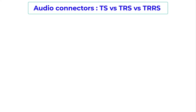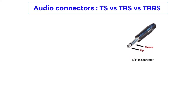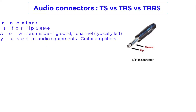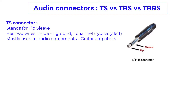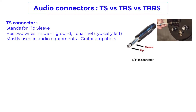Let's start with the first one: a TS connector. It stands for tip-sleeve connector. These connectors have two wires inside — one is for ground and one is for channel, typically a left audio channel. These are mostly used in audio equipment like guitar amplifiers. On the right hand side you can see a picture showing a TS connector going into a guitar.